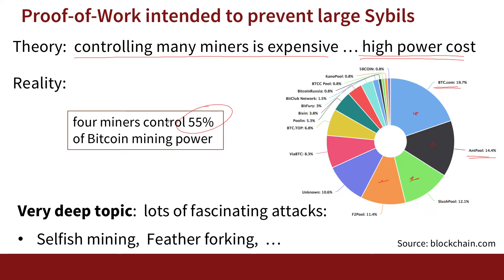Consensus protocols and proof of work is a fascinating and extremely interesting topic. There are lots of attacks and game-theoretic issues around mining, how to distribute rewards, and so on. I won't cover it all here, but if you want to learn more, there are beautiful attacks worth looking up — I would suggest looking up selfish mining, feather forking, and many others — to read about issues and attacks on proof of work.